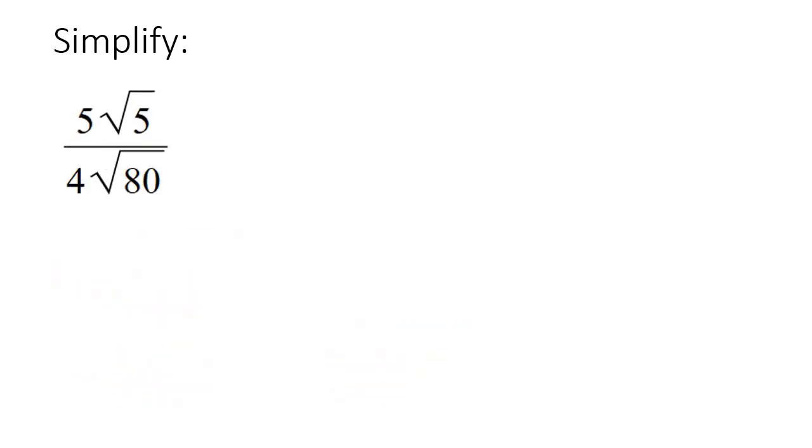Here's our next one. So what I would do is I would just go five over four, and then multiply that with the square root of five over 80. Now, this can be simplified. The number five can go into itself once, and the number five can go into 80 sixteen times.